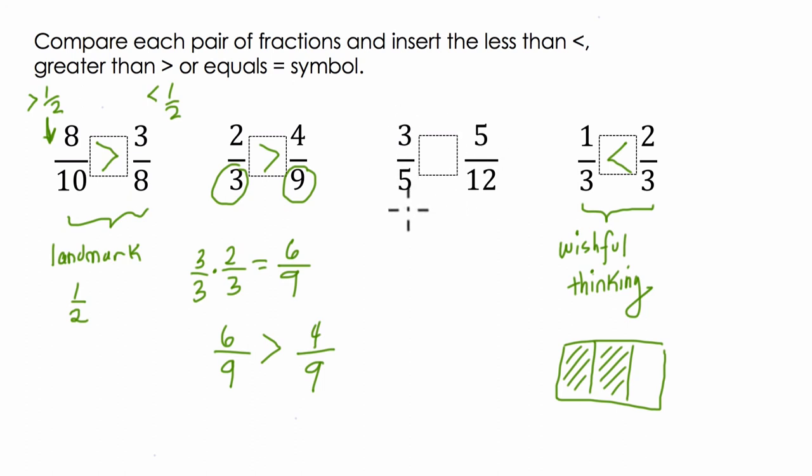I can use the same logic in this one. I can use a landmark fraction. And the way I might use that is to say, okay, well, three out of five, it's bigger than one half. Because a half of five is two and a half. And three, this numerator here, is bigger than two and a half. So it's bigger than a half.